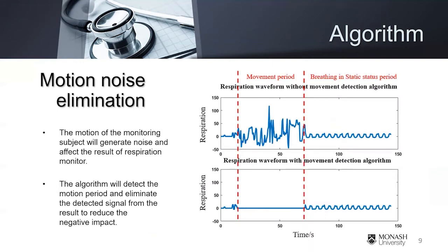I will describe the two algorithms in detail. First, I would like to talk about the motion noise elimination algorithm. As shown on the right side image, there is a body movement period and the corresponding signal is distorted and cannot represent the correct respiration motion. It will impact the respiration rate estimation of this period. By using the motion noise elimination algorithm, the body motion will be detected and eliminated from the respiration waveform. The estimation of the respiratory rate will pause in this period and continue on in the next static status period.